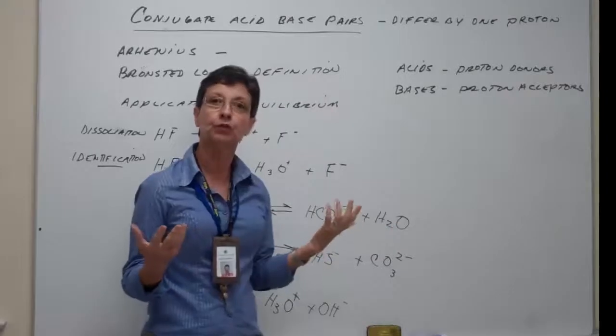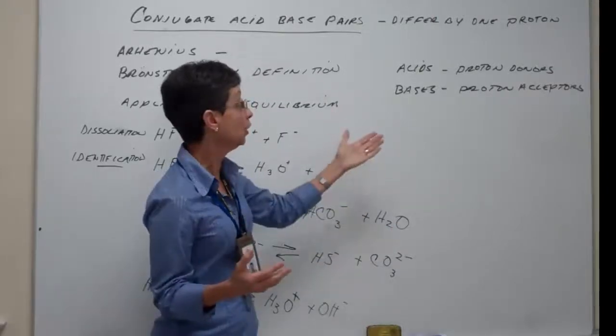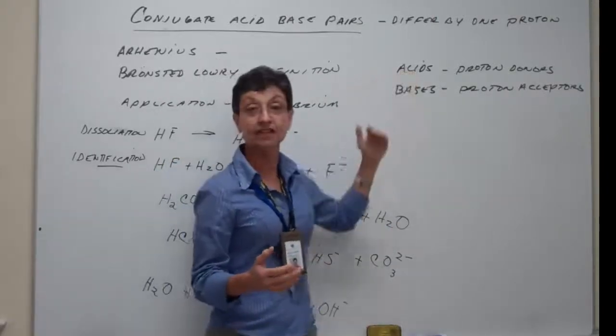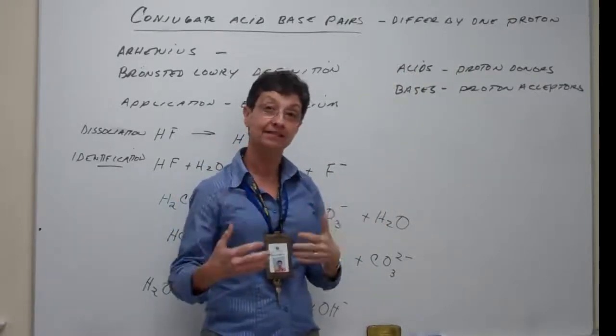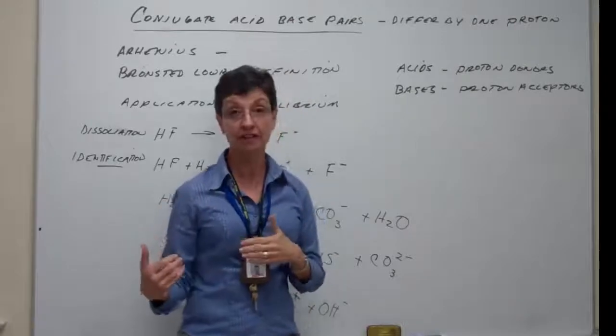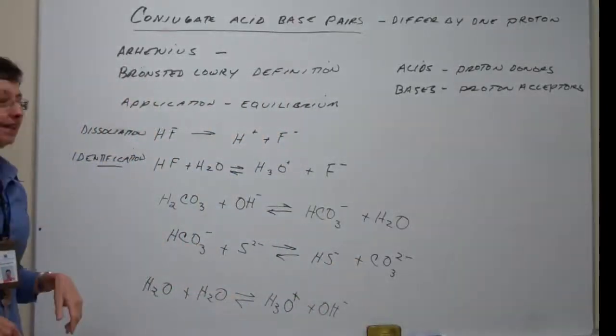Bases are proton acceptors. So, it's pretty simple to be able to pick them out, because we know that an acid is going to have one more proton than its conjugate base. And a base is going to have one less proton than its conjugate acid. But, let's apply that.